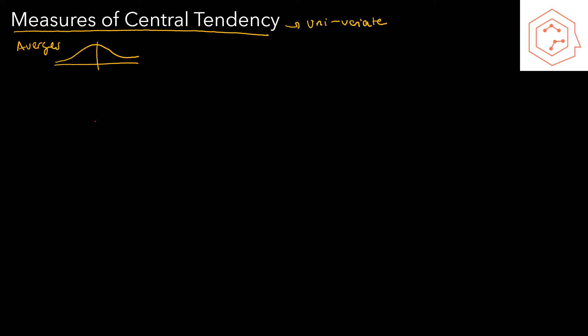For example, suppose I had a normal distribution. My mean, if it's a symmetric distribution, should be somewhere around the middle, which is also where my most frequent results lie. The first and most common measure of central tendency is the mean, represented by x-bar. It's simply equal to the sum of all the data points divided by however many points there are.